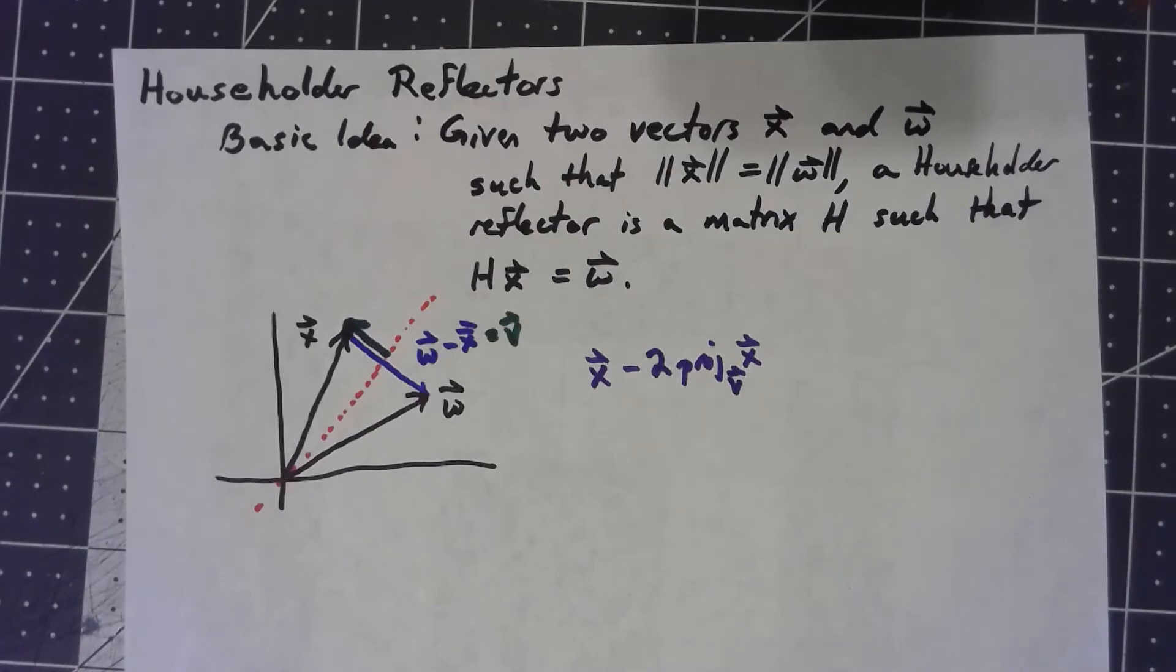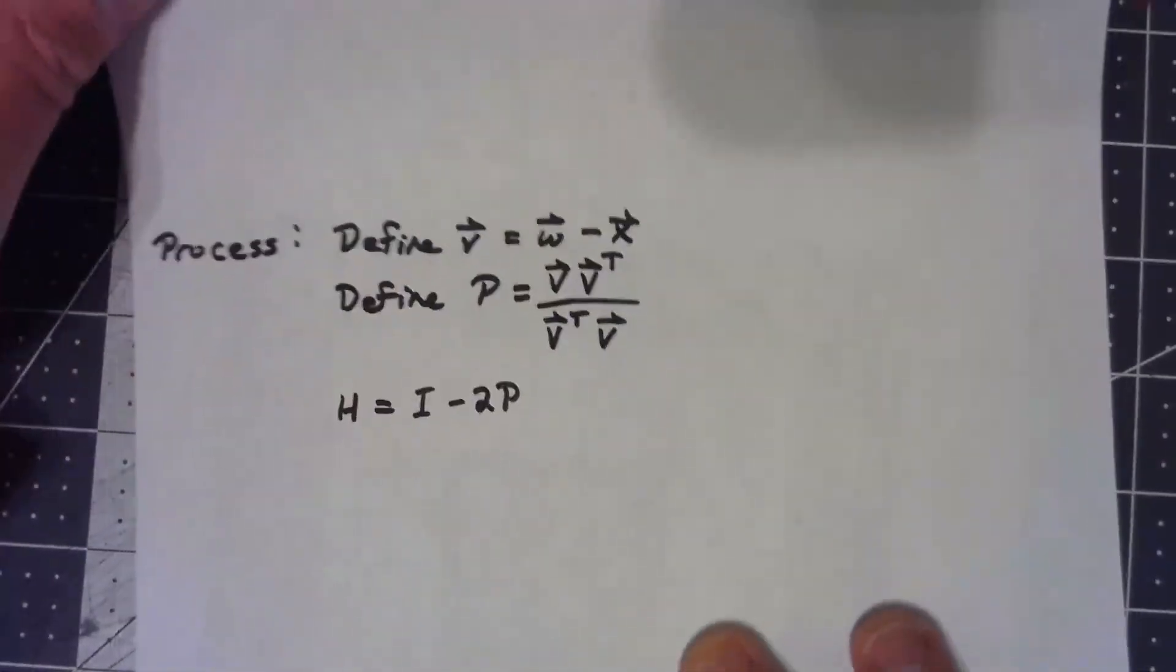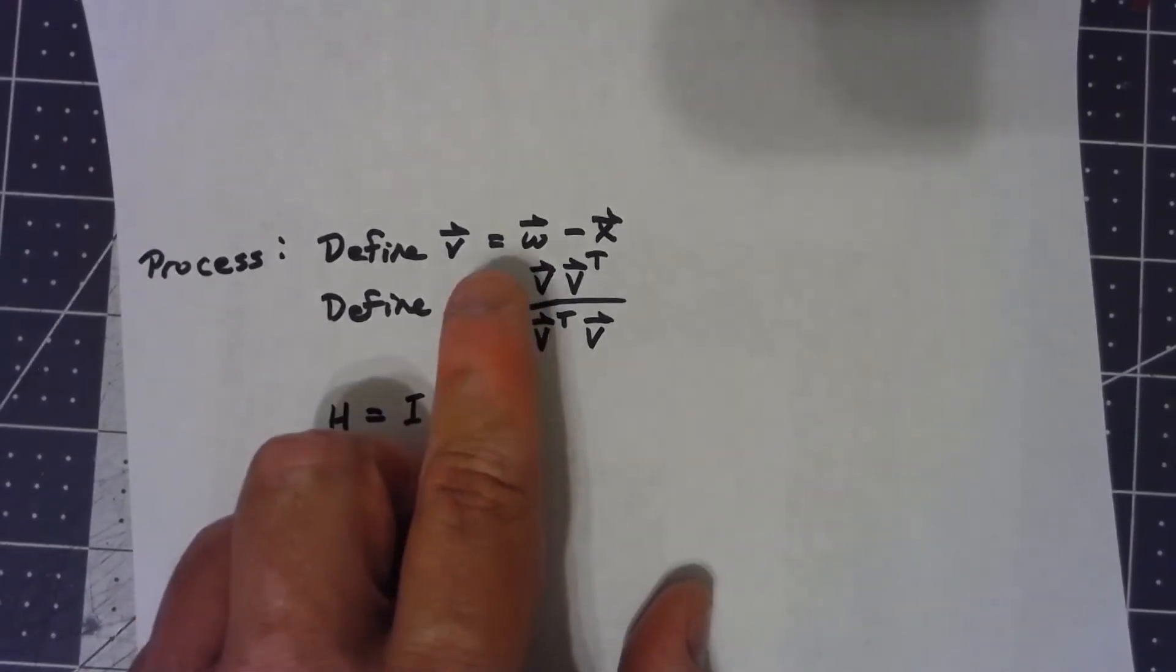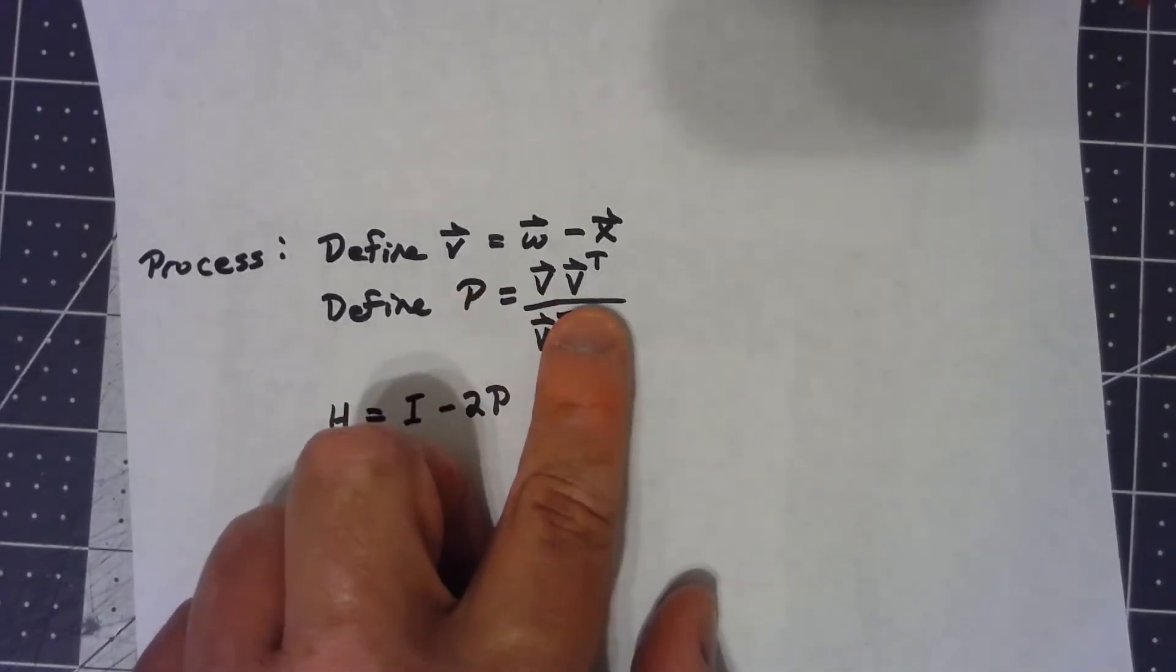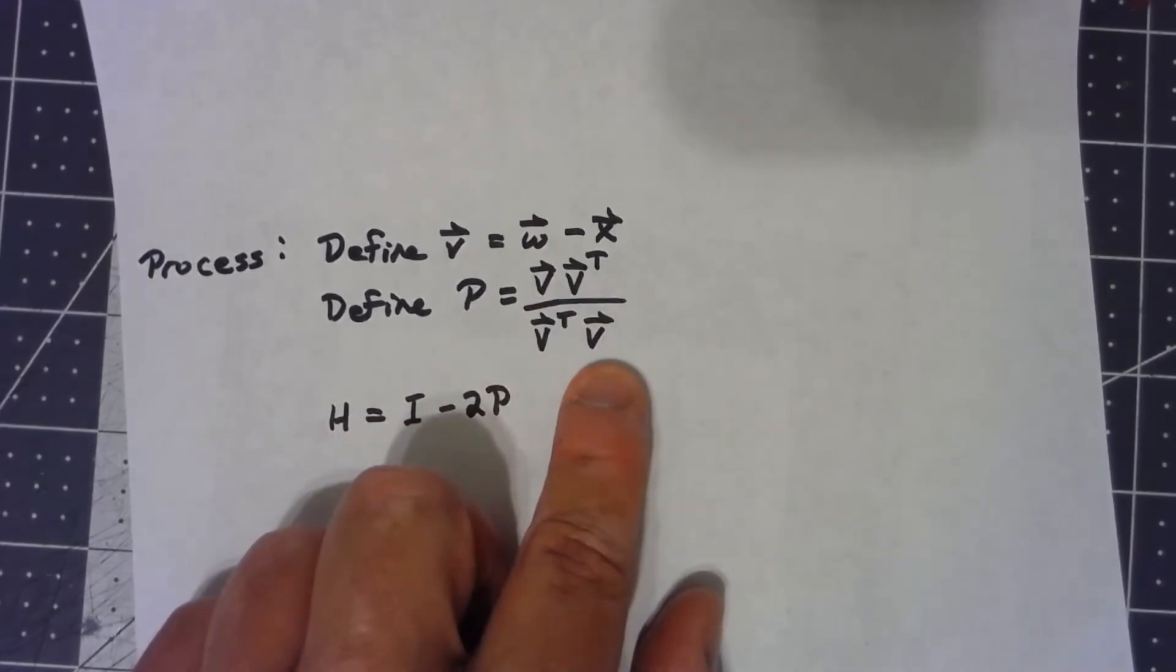Again, I'm not going to go through all the proofs we did to show that this works, but it turns out to be a fairly simple thing. We find that v vector, we find that w minus x, and that projection matrix, what projects us onto the vector v, is v times v transpose over v transpose v. Notice that vv transpose is an n by n matrix, whereas v transpose v is just a scalar.